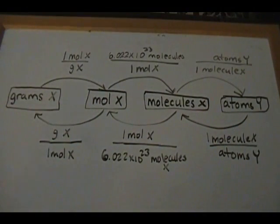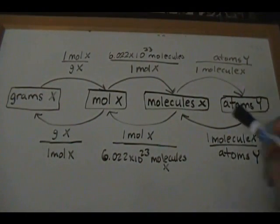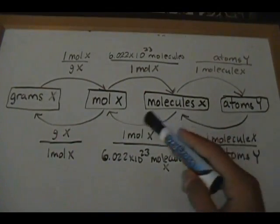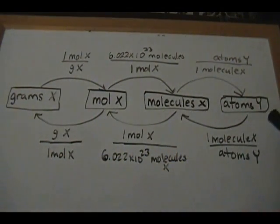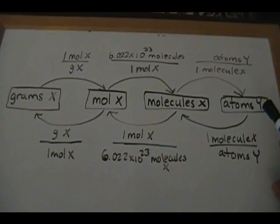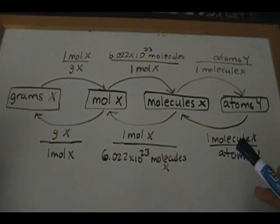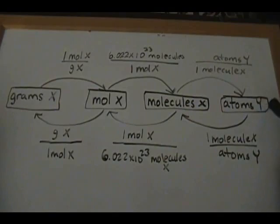Let's decipher this little flow chart I made. The only things we're going to focus on are grams, moles, molecules, and atoms. X can represent a compound or an element, while Y specifically represents an atom. So for example, if we're dealing with compound X and the question asks how many atoms of Y we have, we're going to use a specific path through the flow chart.